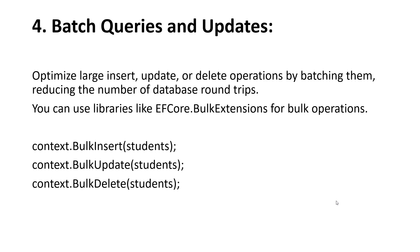The fourth tip is batch queries and updates. Optimize large insert, update, and delete operations by batching them, reducing the number of database round trips. You can use libraries like EF Core Bulk Extensions for bulk operations — for example, context.BulkInsert, context.BulkUpdate, or context.BulkDelete.